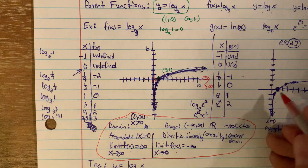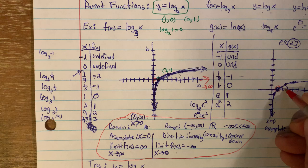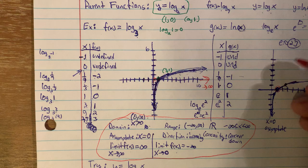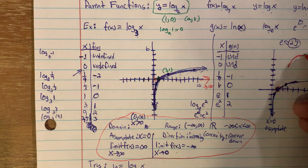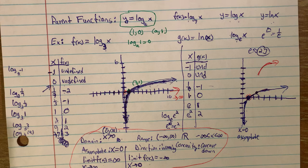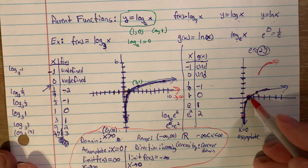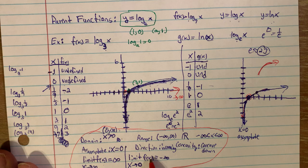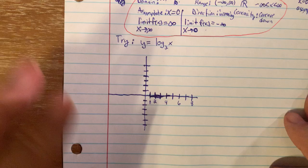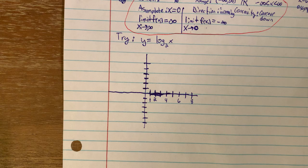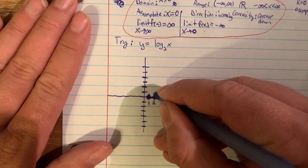So natural log of x also has an asymptote at x = 0. All log parent functions share these properties: a point at (1, 0); when x equals the base, y = 1 — so (e, 1) for natural log; the graph is increasing but concave down; as x goes to infinity the y values keep growing (slowest-growing function we've learned); and as x goes toward 0, the limit goes down to negative infinity along that asymptote.